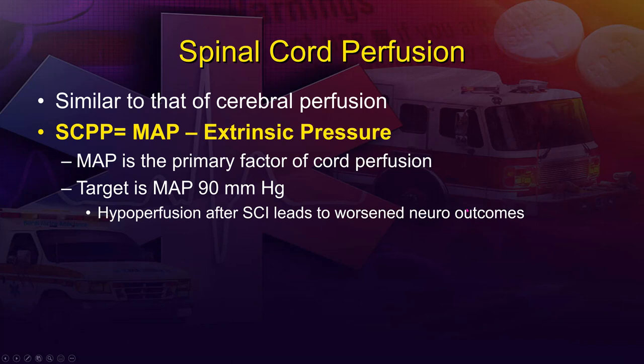Spinal cord physiology is very similar to what we discussed for the brain. The spinal cord has a spinal cord perfusion pressure, which is the difference between mean arterial pressure and the extrinsic pressure around the cord. This is analogous to cerebral perfusion pressure — MAP minus intracranial pressure. There is a bit more flexibility in the spaces along the spine than in the rigid skull. When a patient has a spinal cord injury and swelling occurs, that increased pressure decreases perfusion. Our target MAP in isolated spinal cord injuries is 90 mmHg or above.